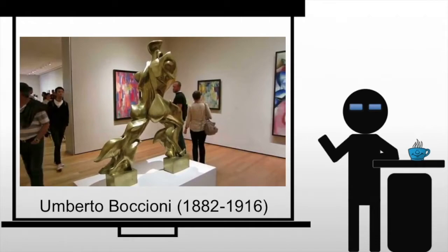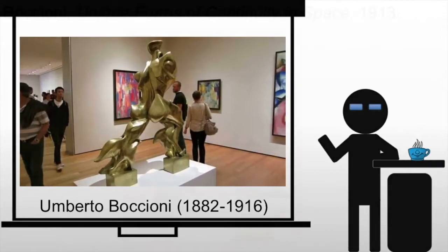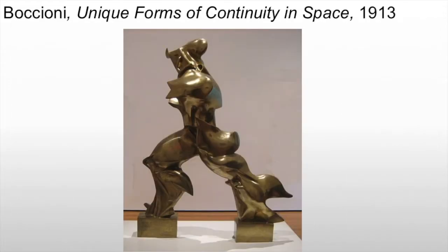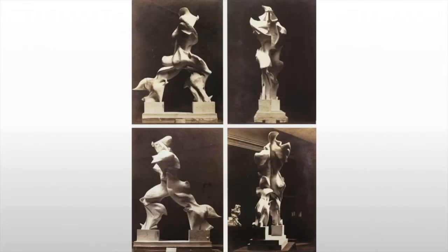In 'Unique Forms of Continuity in Space,' the artist highlights formal and spatial effects of motion rather than their source. So he's focusing on the motion itself, not the source of the motion like we would see in Rodin. The figure is so distorted and broken that it disappears in a blur of its own motion.